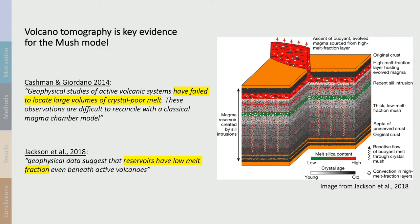Despite the shortcomings, in the last 10 to 20 years volcano tomography has become one of the key pieces of evidence in support of the mush model. For example, Cashman and Giordano in 2014 wrote that geophysical studies of active volcanic systems have failed to locate large volumes of crystal-poor melt, and these observations are difficult to reconcile with a classical magma chamber model. Jackson et al. in 2018 wrote that geophysical data suggests reservoirs have low melt fraction, even beneath active volcanoes.